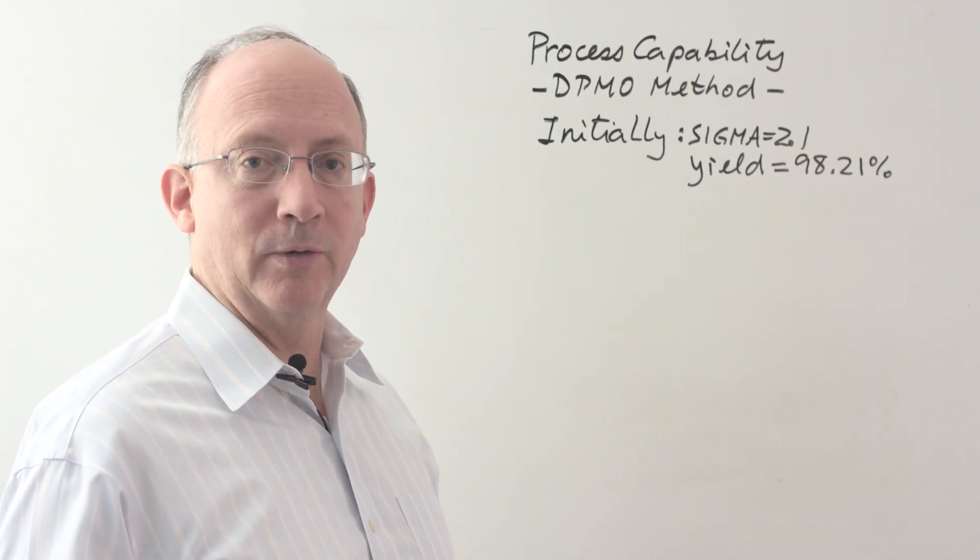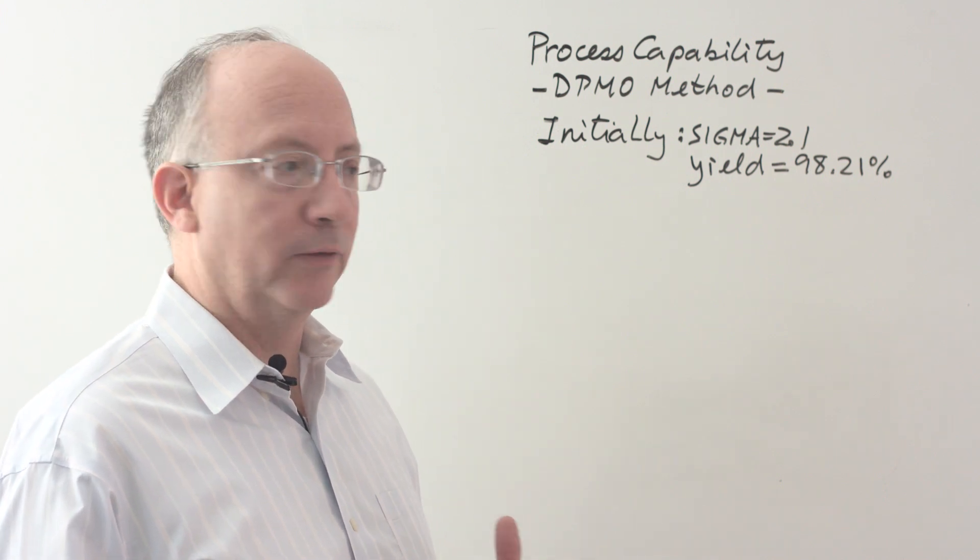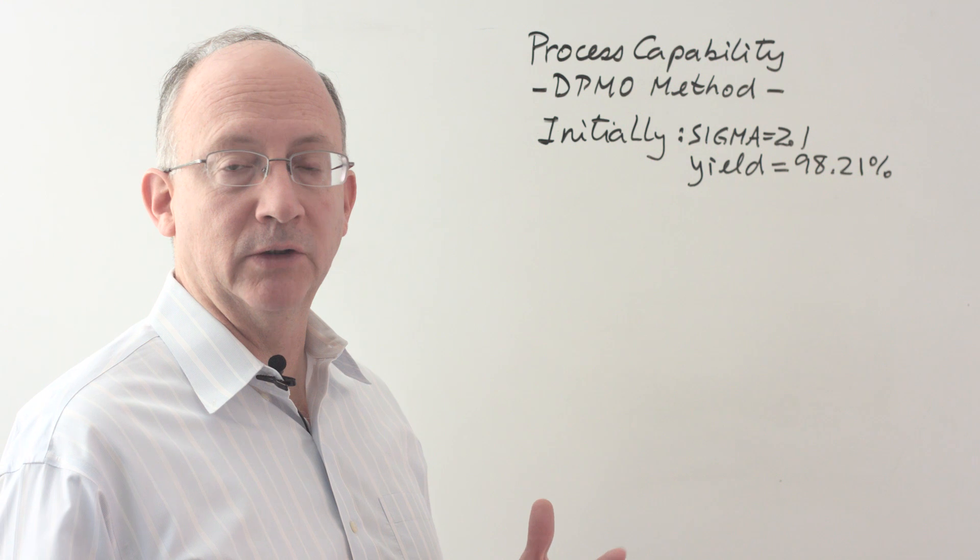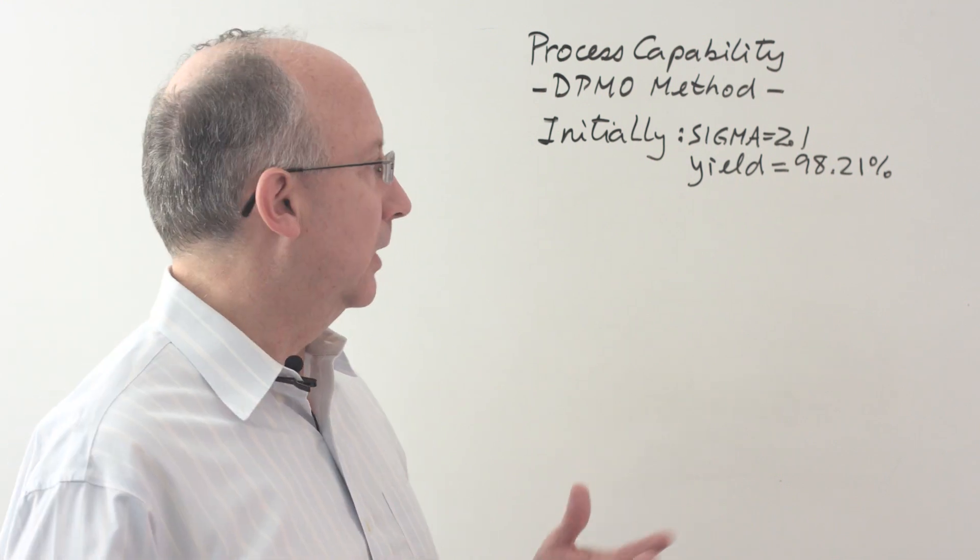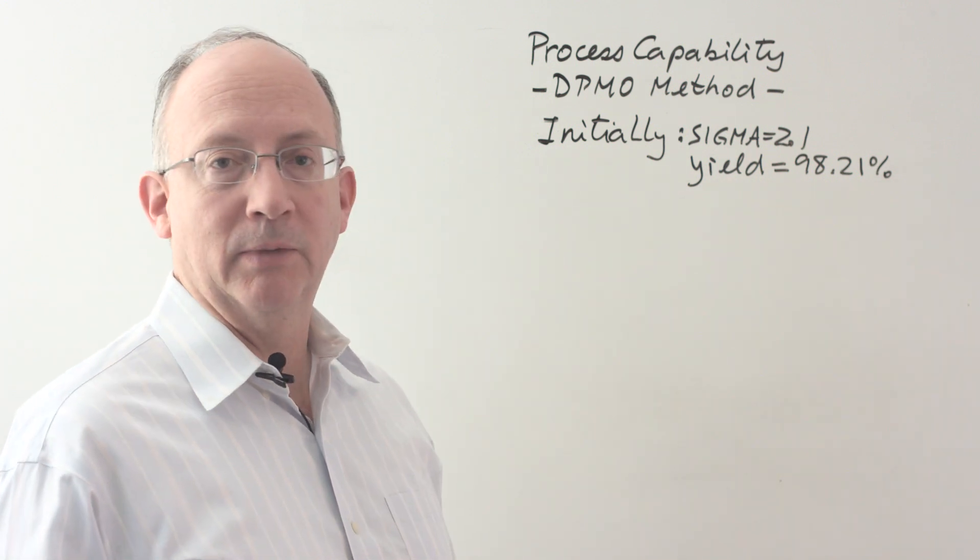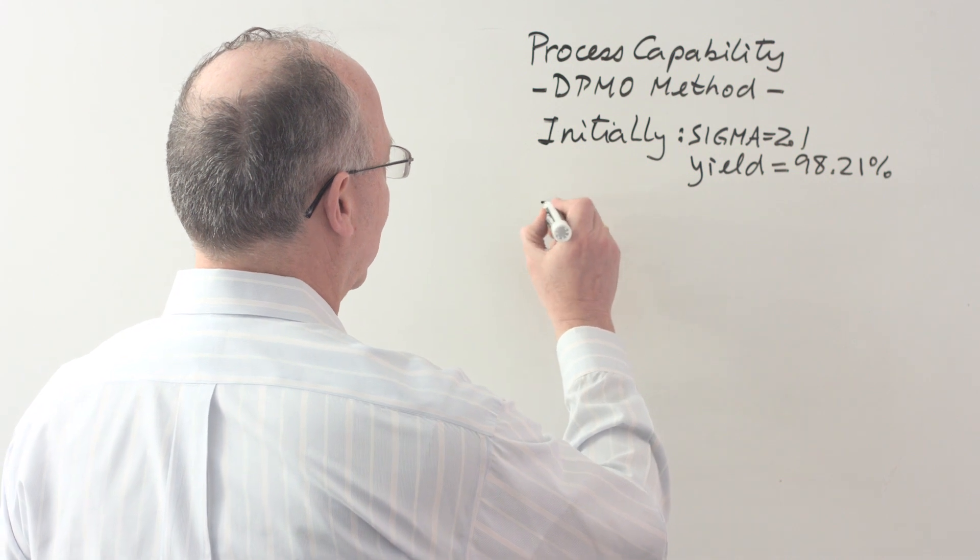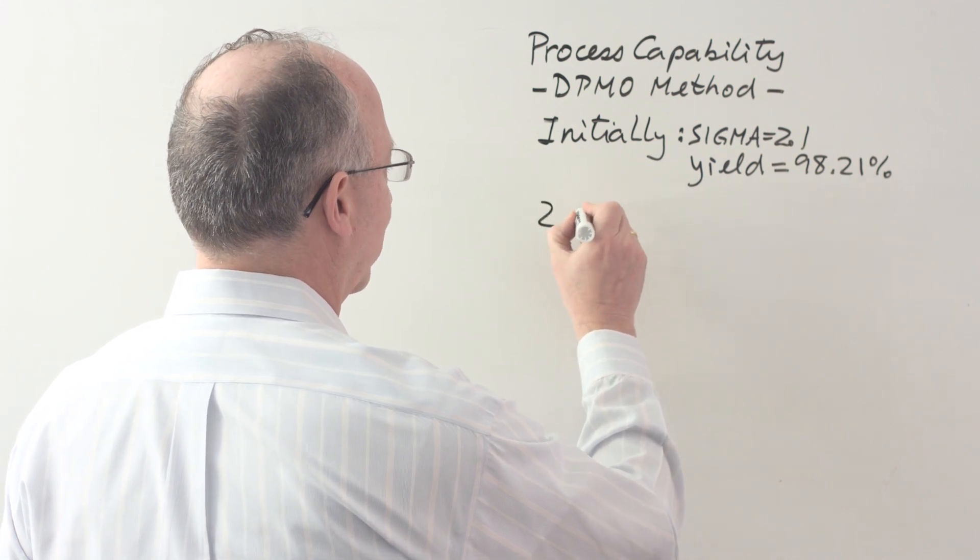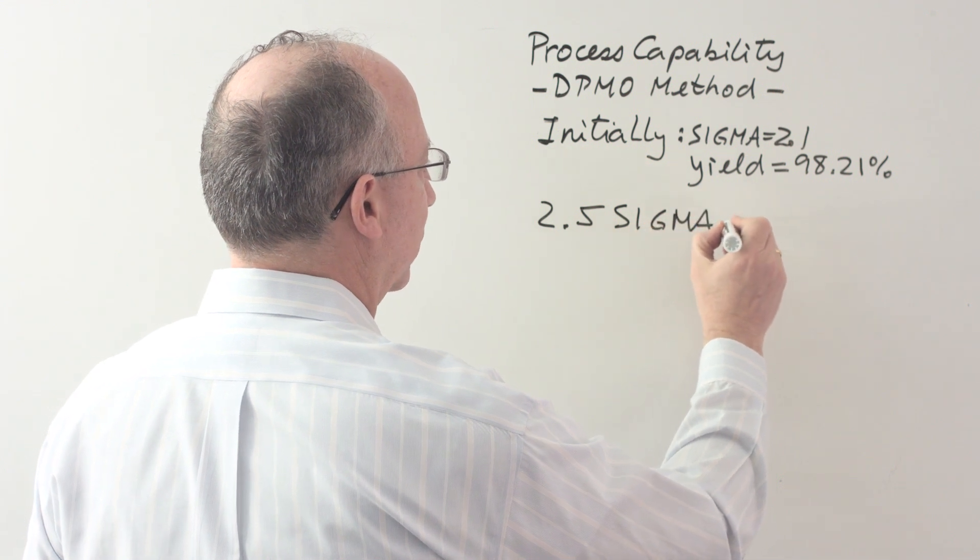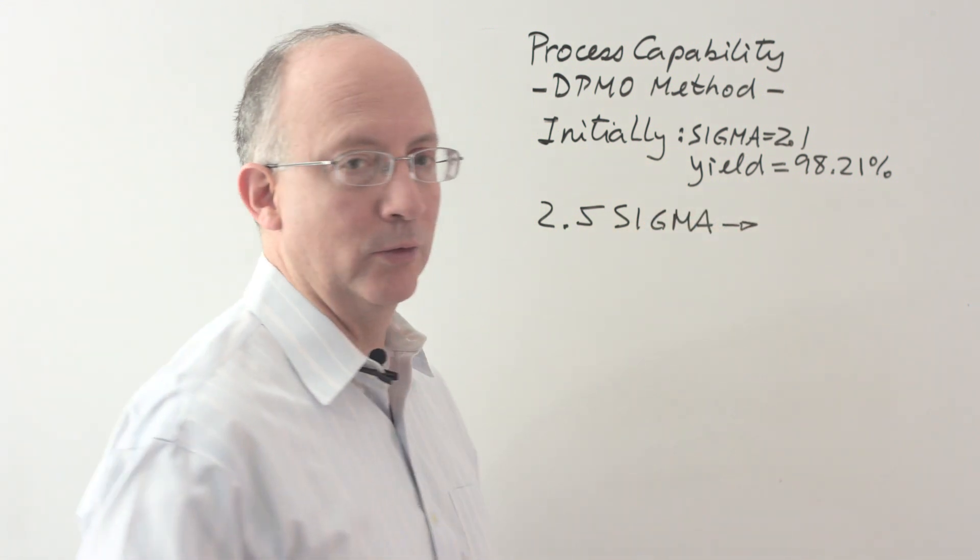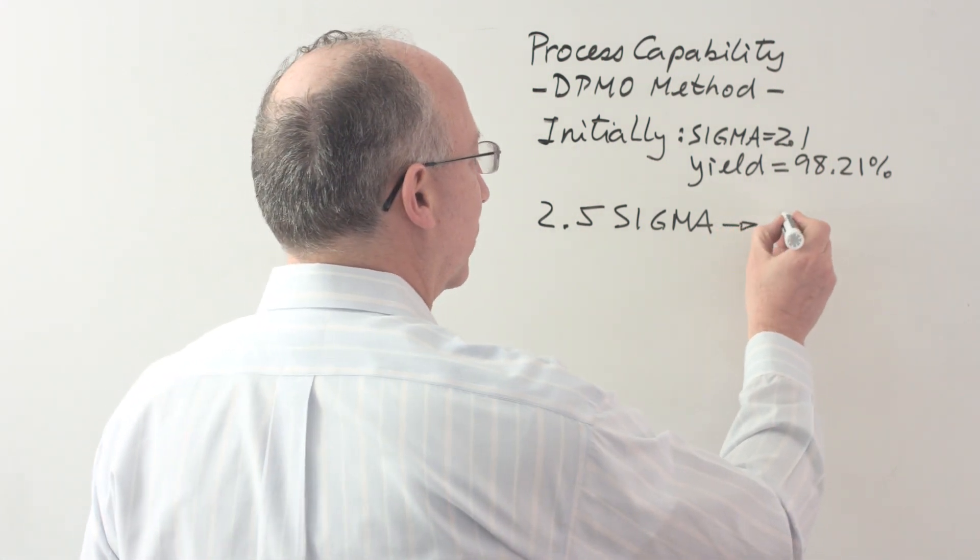Yet another type of problem that we may find here is that maybe what we need to do is we've given ourselves a certain sigma target value. Let's say that the organization wants us to operate not at the 2.1 sigma, but 2.5 sigma. What would be the meaning of this? Well, if the target is sigma of 2.5, then the first thing that we need to do is to say, what does this correspond to in DPMO? Because that's how we need to measure things. And so, the DPMO is going to be, from the table again, 6,210.